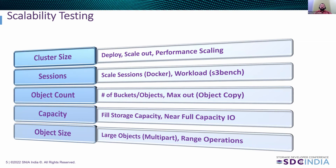Now we will take a look at the specific area of scalability testing. We consider cluster size as one of the parameters. Typically, deployment scaling starts from a small number of units going to a large number of units using some kind of automated solution, CI/CD, and live infrastructure. The objective of scale testing is also to validate if the performance gains are significant and proportional to the linear scaling of nodes, Kubernetes pods, containers, disks, and enclosures. Another factor considered is parallel or concurrent sessions. As the infrastructure is Kubernetes-based, we look for Docker container scaling as sessions increase, and we use tools like S3 bench to test the scalability of the number of sessions.